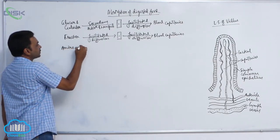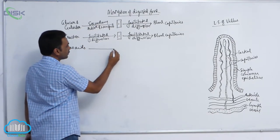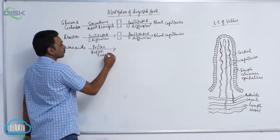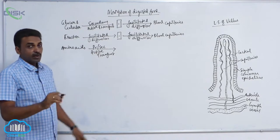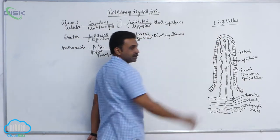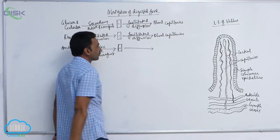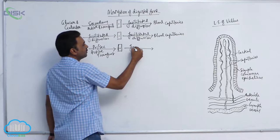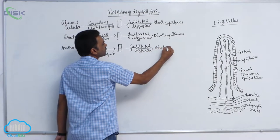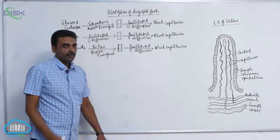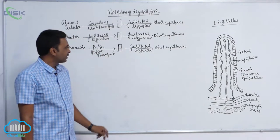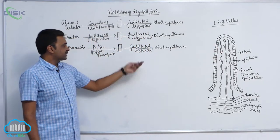Amino acids enter into the epithelial cell by primary or secondary active transport, and from there they enter into blood capillaries by facilitated diffusion.